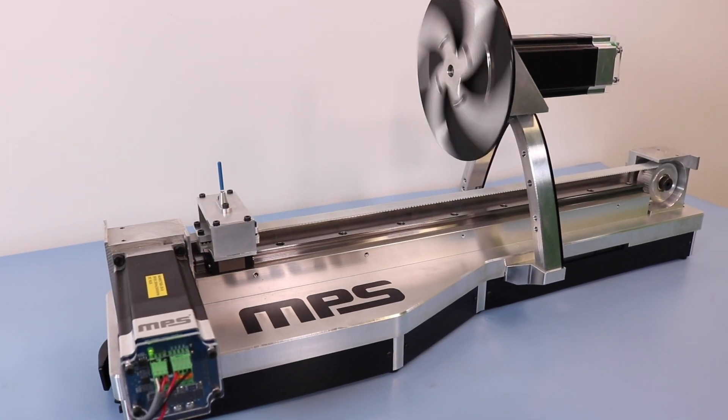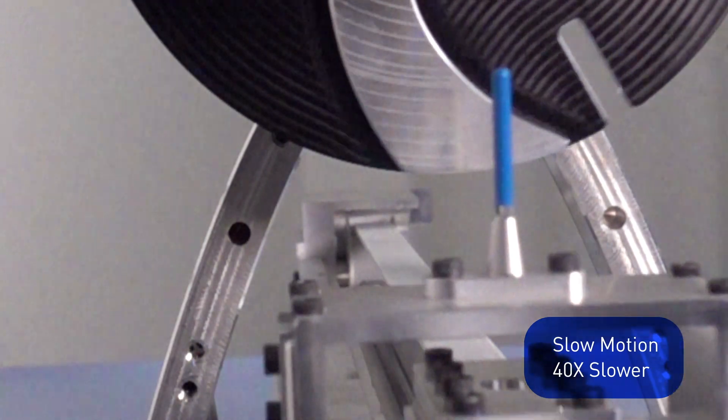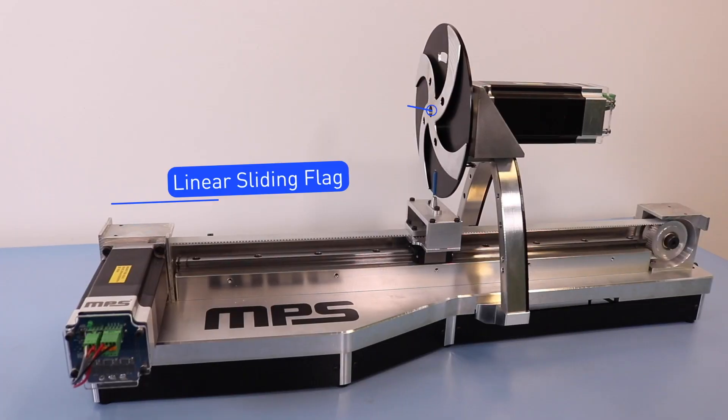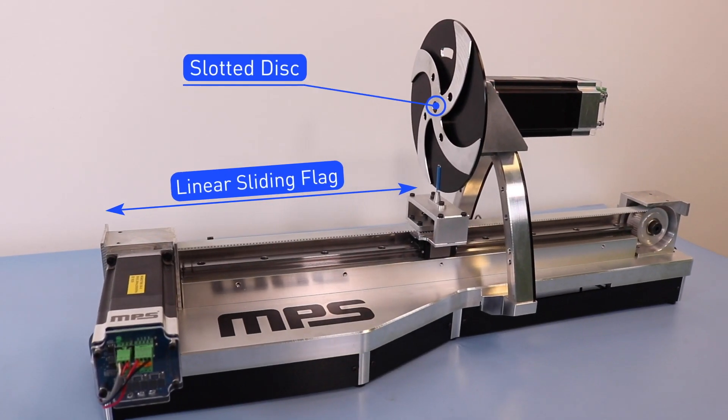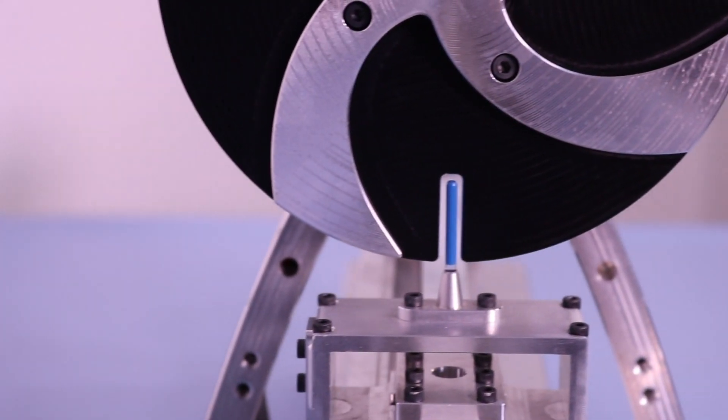Multi-axis motor systems used in industries like robotics and industrial automation require highly precise motion control. Here we have a two-axis brushless DC motor system consisting of a spinning slotted disc and linear sliding flag.